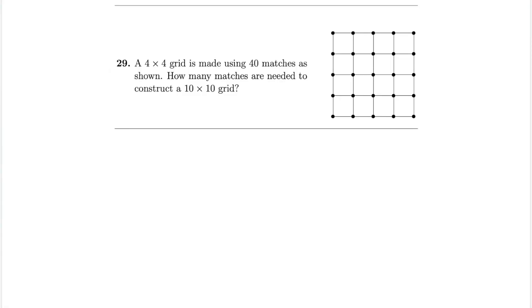So here is problem number 29. A 4x4 grid is made using 40 matches as shown. How many matches are needed to construct a 10x10 grid? So what you do here is we look at the number of horizontal and vertical matches. Here we can see that, so first let's look at the horizontal matches. There are four columns of horizontal matches. And there are five rows of horizontal matches.